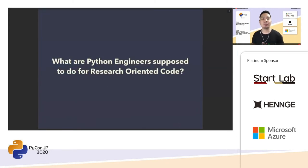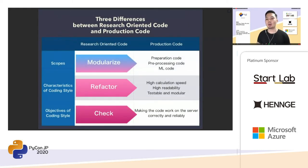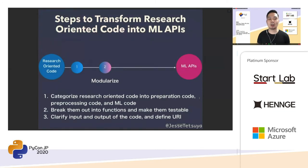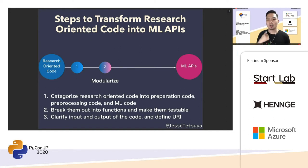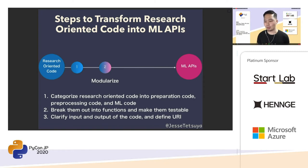So what are Python engineers supposed to do for research-oriented code? Modularize the research-oriented code into preparation code, pre-processing code, and ML code, then refactor them, and write the code to check how it can work correctly. The second step is to modularize the code. There are three small steps: first, categorize research-oriented code into preparation code, pre-processing code, and ML code; second, break them out into functions and make them testable; and last, qualify input and output for the code and define URIs.